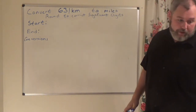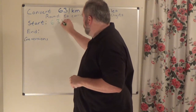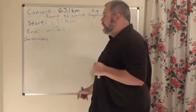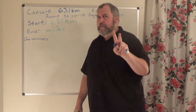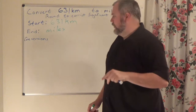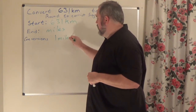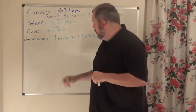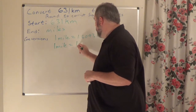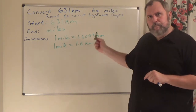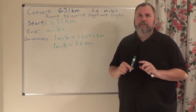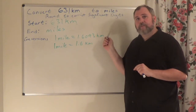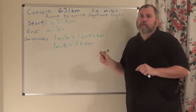Same principle as always: where am I starting? 631 kilometers. Where's my end game? Miles. You may find two different conversion factors on your sheet: one mile equals 1.6093 kilometers, or one mile equals 1.6 kilometers. I suggest using 1.6093 because that's what your homework uses. Both are technically correct, but you can only use one. The 1.6093 version is more precise.